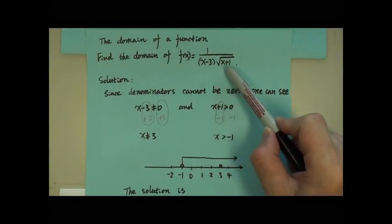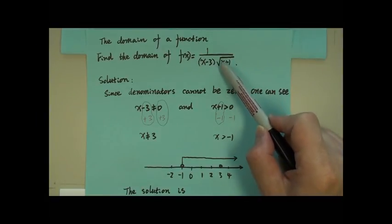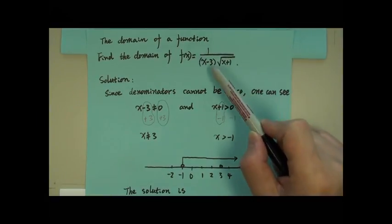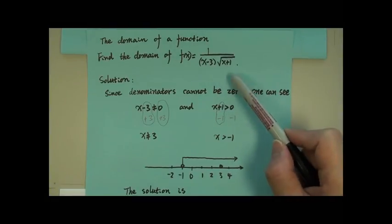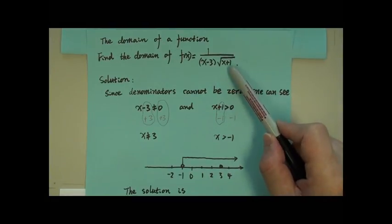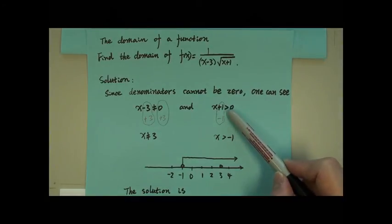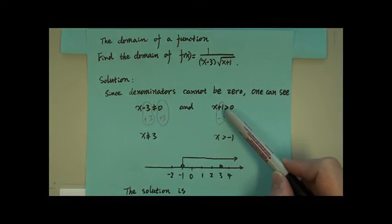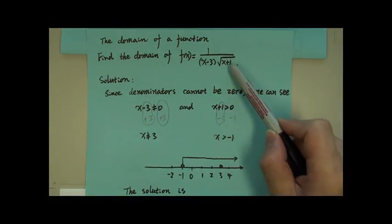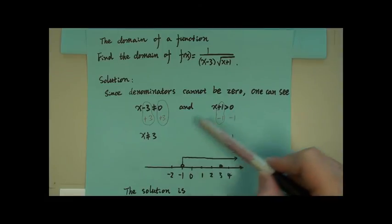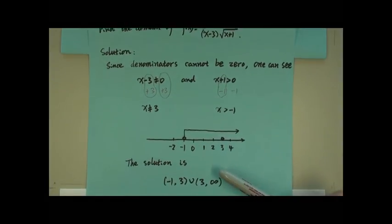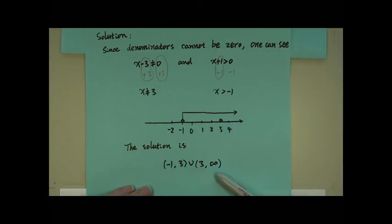Remember, this is a very typical example. It has a radical sign and a denominator. So the denominator cannot be zero. Expression inside the radical sign has to be non-negative. In this case, it has to be positive because the denominator cannot be zero. Then solve those two separately and combine the solution in this way.